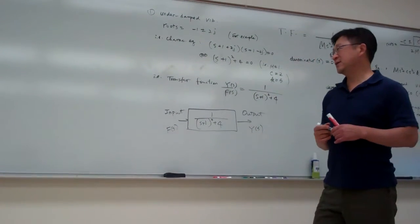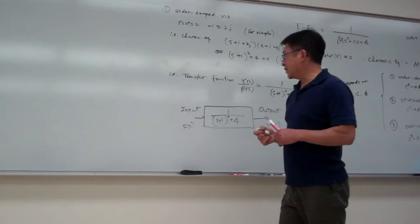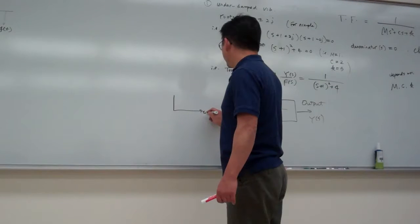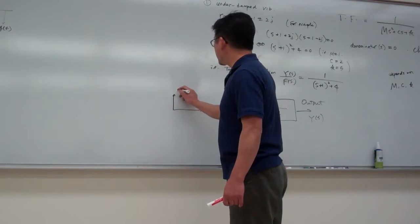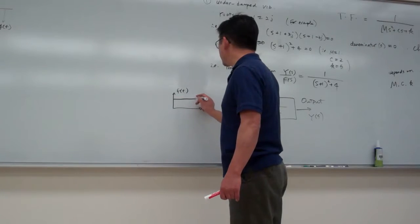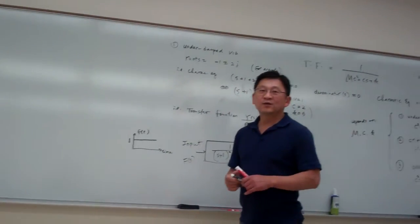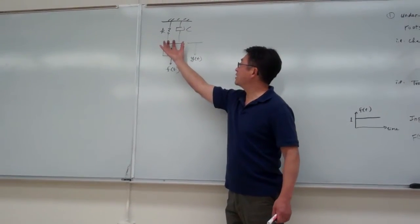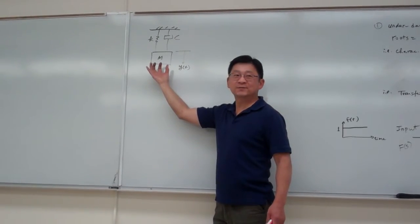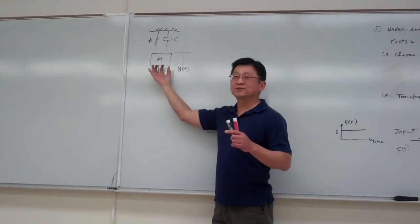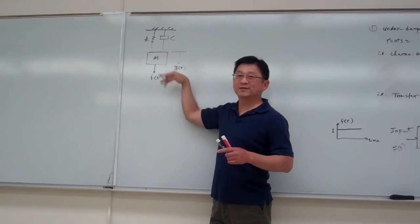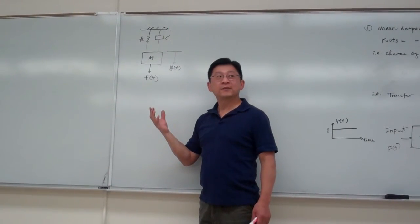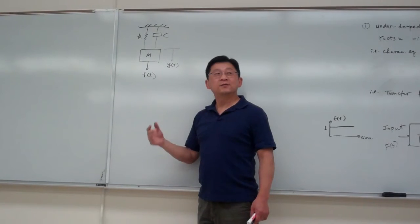We look at what's going on here. For example, let's make one example: say our input — let this be time, and this is our input F of T. Let me pick the easiest one: unit step input. What I mean by unit step input is this — you hold the mass block, move it down by one unit, hold there, and once we count down to zero, we release it. Then the system is going to vibrate.